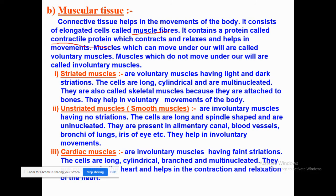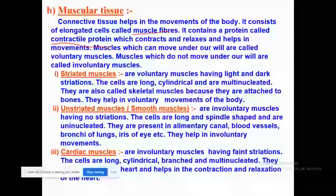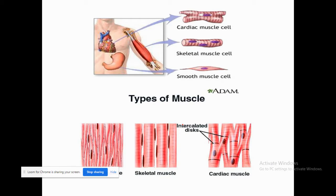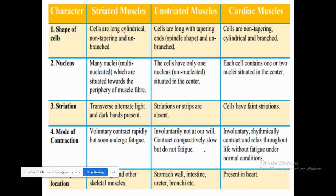Muscles that can move under our will are known as voluntary muscles, and muscles that do not move under our will are known as involuntary muscles. So muscles are of two types: voluntary muscles, which are under our control, and involuntary muscles, which are not under our control. On the basis of various characteristics, these are of three types: striated muscles, unstriated muscles, and cardiac muscles.